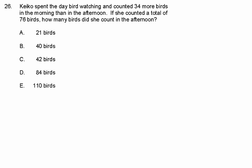So, what we need to do is find out how many birds she counted in the afternoon. We know that she counted 34 more birds in the morning than she did in the afternoon, and we also know that there was a total of 76 birds counted in all. So, let's go back to this idea.